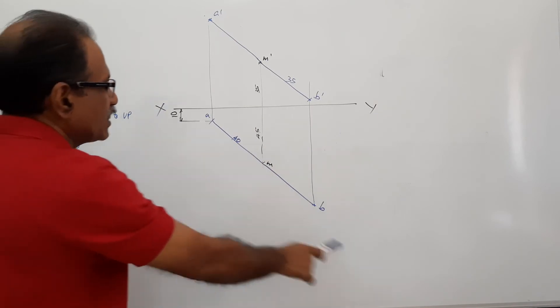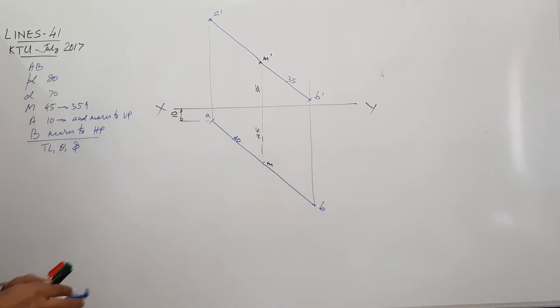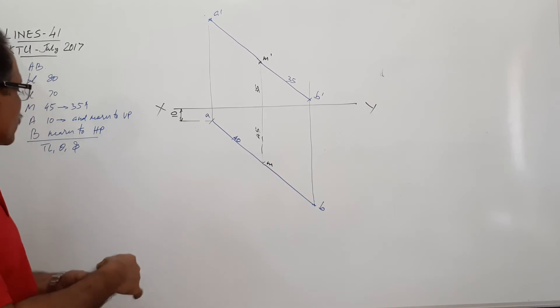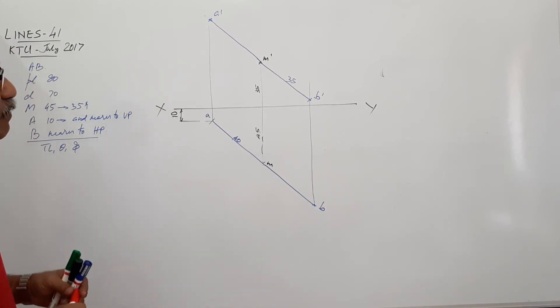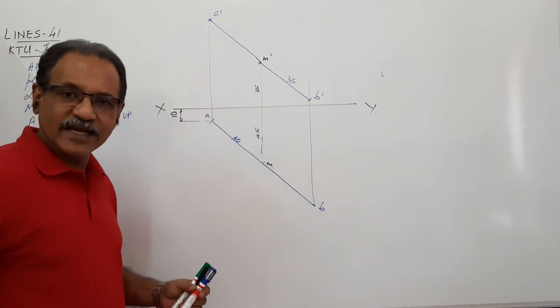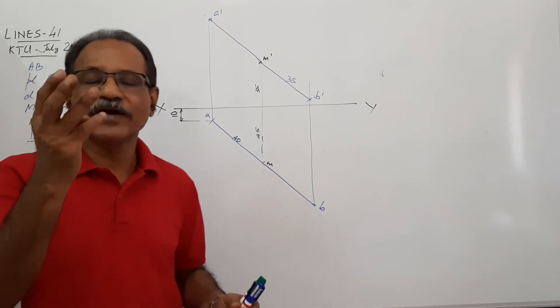You have got the elevation and plan. A dash, B dash is the elevation. A, B is the plan. Draw the projections, you have done that. Find out true length, theta and phi. You have given the plan and elevation of a line. You have to find out true length, theta and phi.